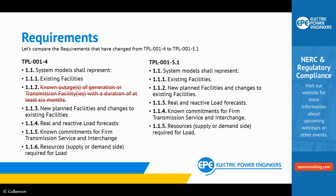Moving on to Requirement 1, Part 1.1.2 — this was removed completely from the new standard. The prior language stated the system model shall represent known outages of generation or transmission facilities with a duration of at least six months. There is now more language added to other requirements that will address these long lead time issues. So 1.1.2 was simply removed.